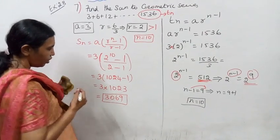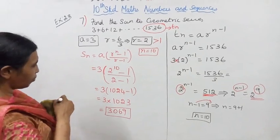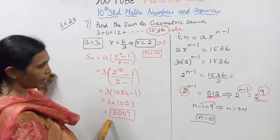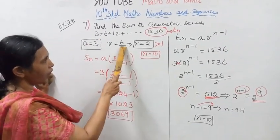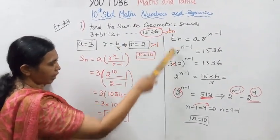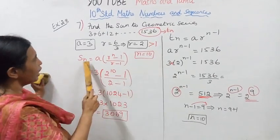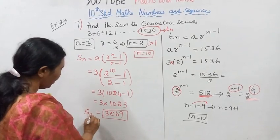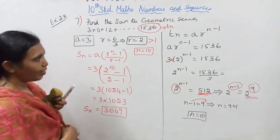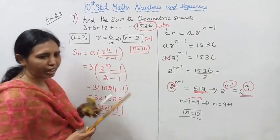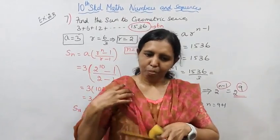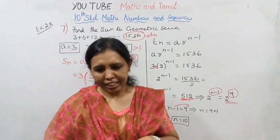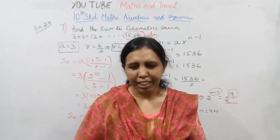3069 is the answer. Find the sum of the geometric series — the answer is S10 equals 3069. You can practice this. This channel helps you to get 100 marks — you can do it!